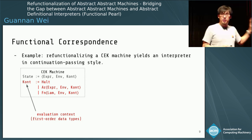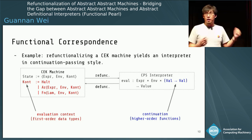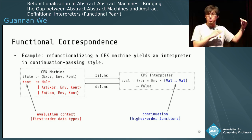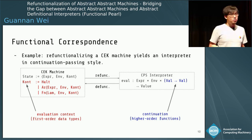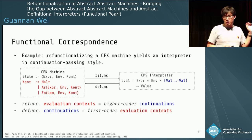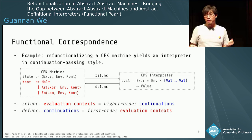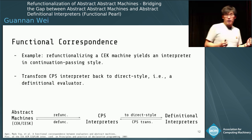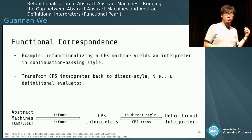If we refunctionalize the CEK machine, we obtain a CPS interpreter — basically a single recursive eval function. The third argument of this eval function is a higher order function that takes the value result from the previous computation and carries out its job, which is the idea of continuation. This shows that refunctionalized evaluation contexts are just higher order continuations, and defunctionalized continuations are just first order evaluation contexts.